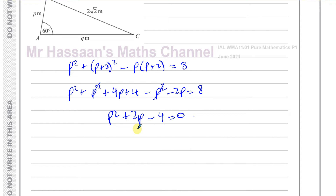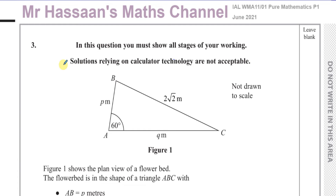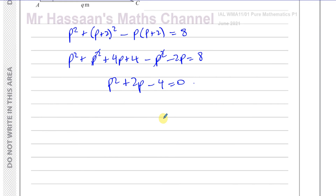So this has to be solved by either the quadratic formula or completing the square. Whatever method you use, you have to show your steps — that was the whole point of the wording. If you just write down your answer without showing that you completed the square or used the quadratic formula, you will definitely lose marks. You can't just say P equals this using your calculator. I'm going to do both methods.